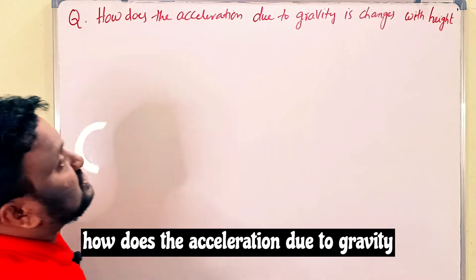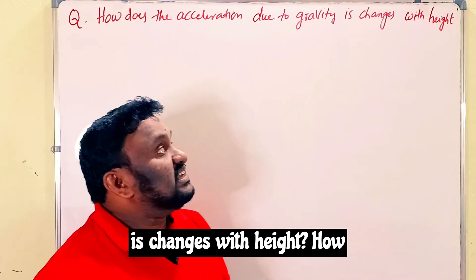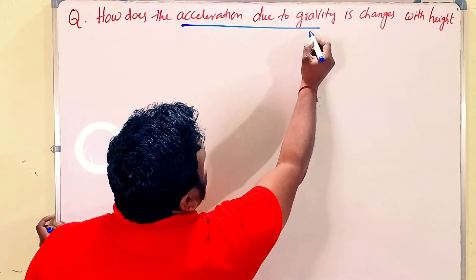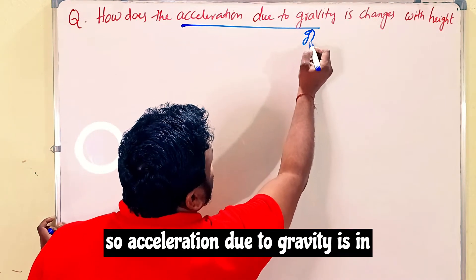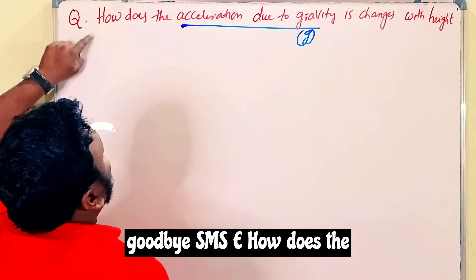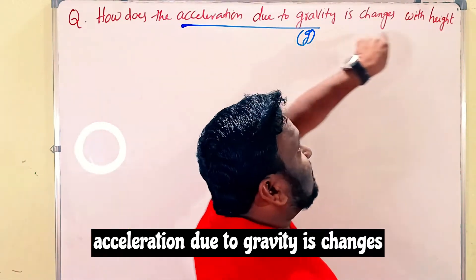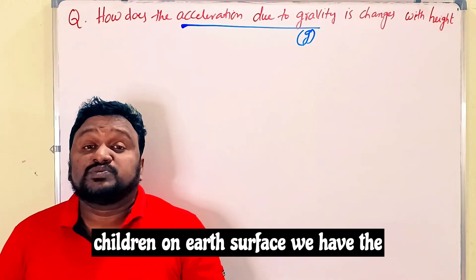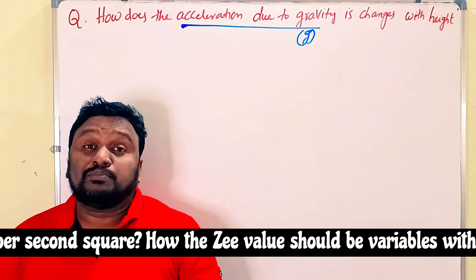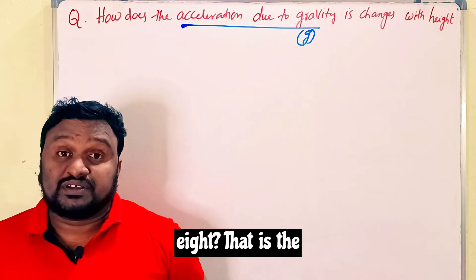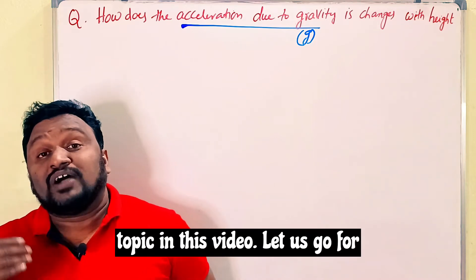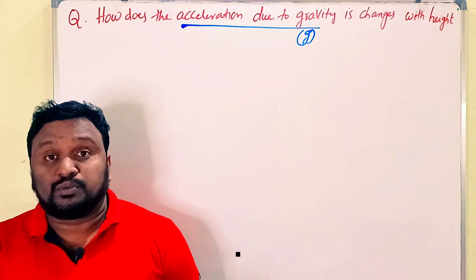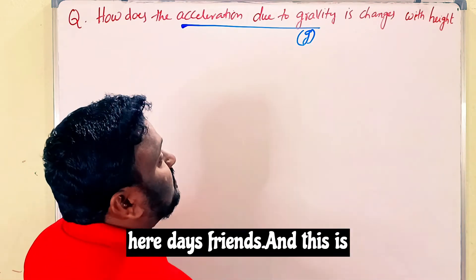The question is: how does the acceleration due to gravity change with height? Acceleration due to gravity is indicated by small g. On the Earth's surface, the value of g is 9.8 meters per second squared. How does the g value vary with respect to height? That is the topic of this video.